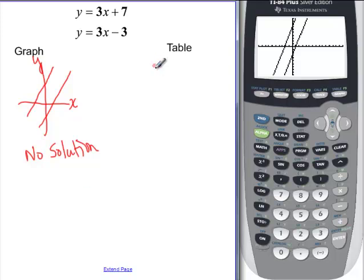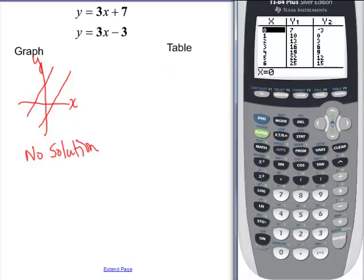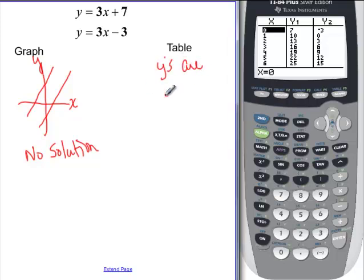And if you look in the table, you will notice that this is 7 to negative 3, 10 to 0, there's always a difference of 10. 13 and 3, there's a difference of 10. 16 and 6, a difference of 10. They're never getting any closer. They're always the same distance away. So the Ys are the same distance from each other.